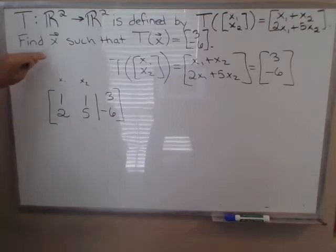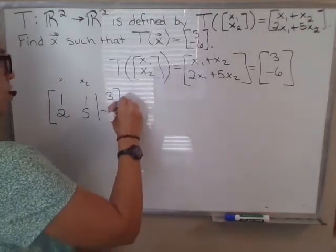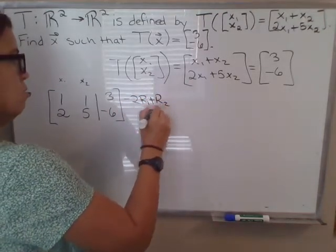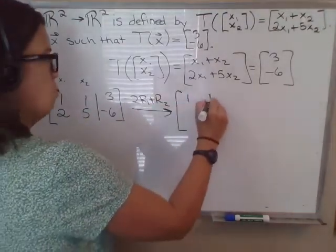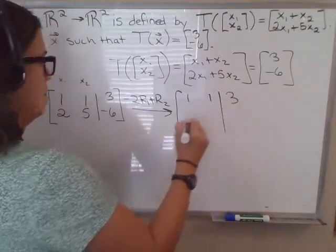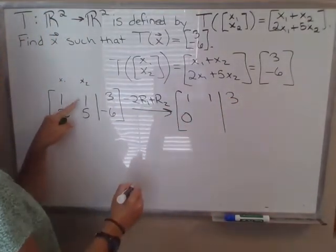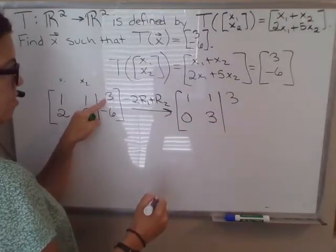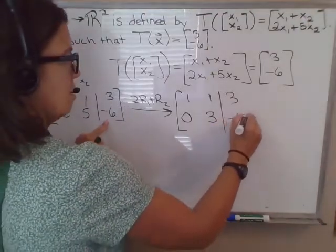So we can find the vector x that we're looking for by reducing this augmented matrix. If I do negative 2 times row 1, add that to row 2, that'll zero out this entry here. So I'm going to keep row 1 the same. Row 2 will be negative 2 plus 2, negative 2 plus 5, and negative 2 times this, so negative 6 plus negative 6, negative 12.